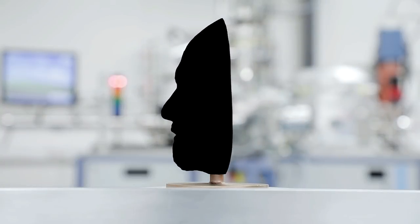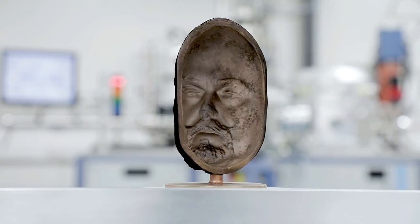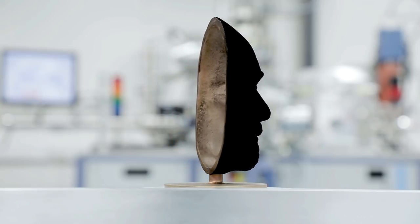And now you can see Vantablack S-Vis on a bronze mask. Both faces are shaped exactly the same way, but are demonstrated using different coating technologies to make them super black.